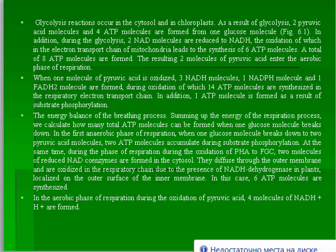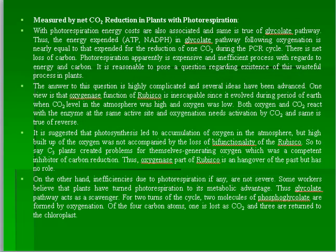Summing up the energy balance of the respiration process: in the first anaerobic phase, when one glucose molecule breaks down to two pyruvic acid molecules, two ATP molecules accumulate during substrate phosphorylation. During the oxidation of two NADH molecules formed in this phase, they diffuse through the outer membrane and are oxidized in the respiratory chain, synthesizing six ATP molecules. In the aerobic phase, during the oxidation of pyruvic acid, additional ATP molecules are formed.